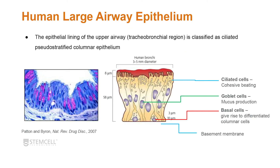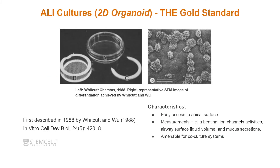The most commonly studied of these cell types are large airway epithelium obtained from bronchial epithelial cells — the epithelial lining of the upper airway, classified as ciliated pseudostratified columnar epithelium. These cells contain ciliated cells with cohesive cilia beating, goblet cells that produce mucus, and basal cells at the base that give rise to the differentiated columnar cells, all sitting on a basement membrane. ALI cultures, or 2D organoids, have been the gold standard culture model for a long time.